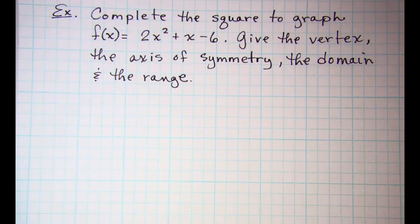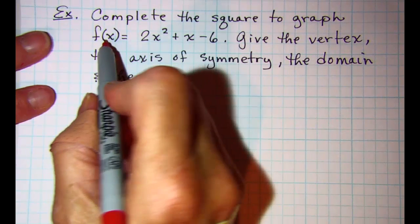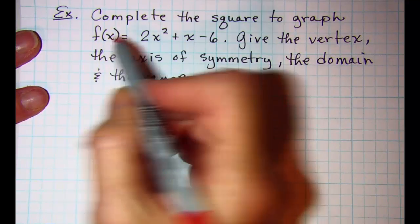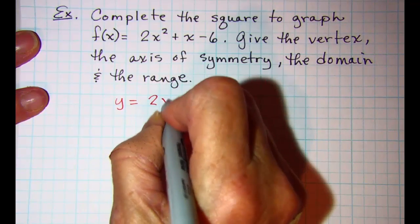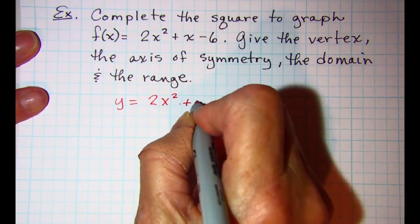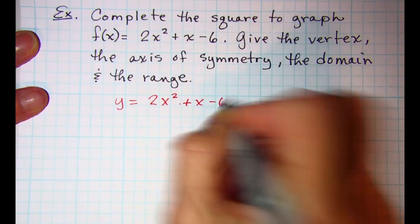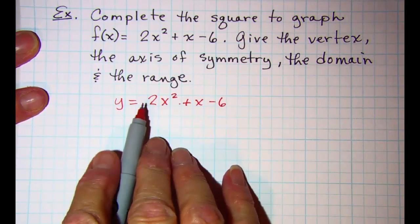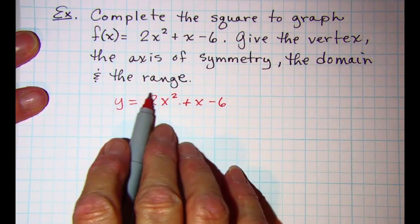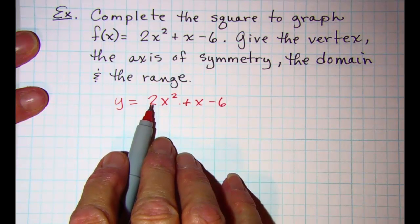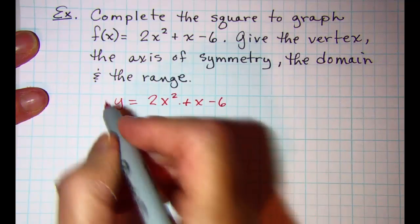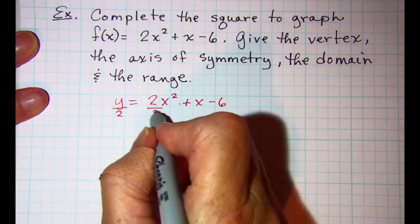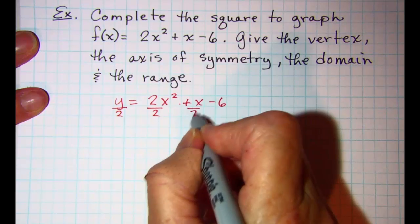Our first step when we're completing the square is to write this function as y equals. So we have y equals 2x squared plus x minus 6. We cannot complete the square as long as the lead coefficient is a number other than 1.